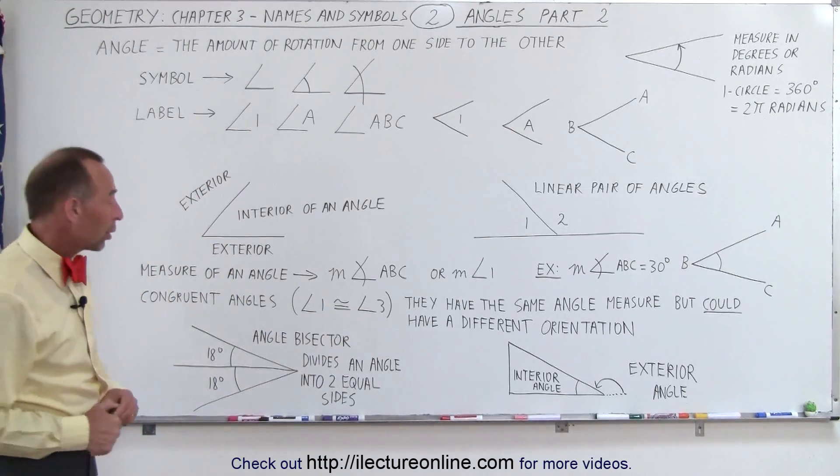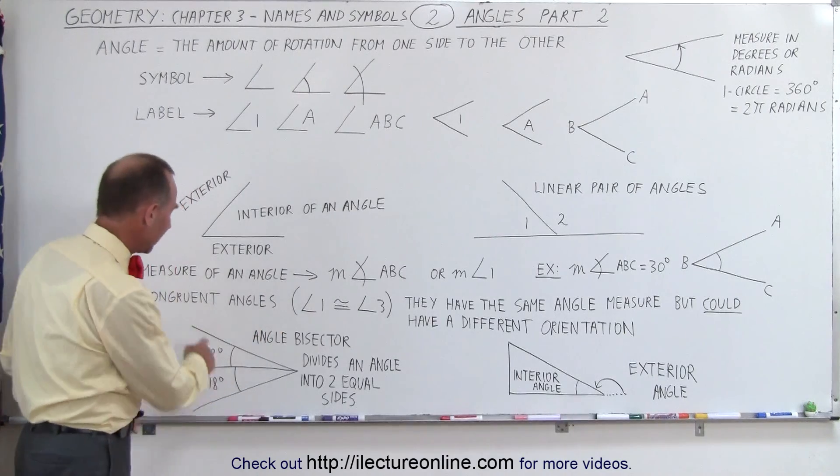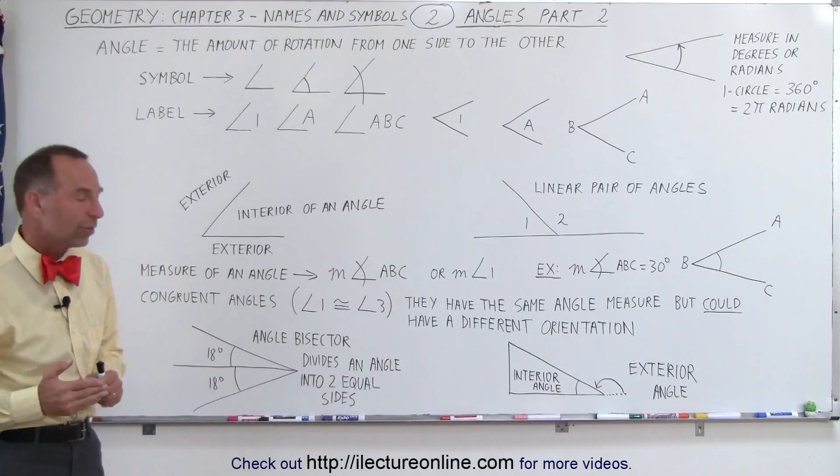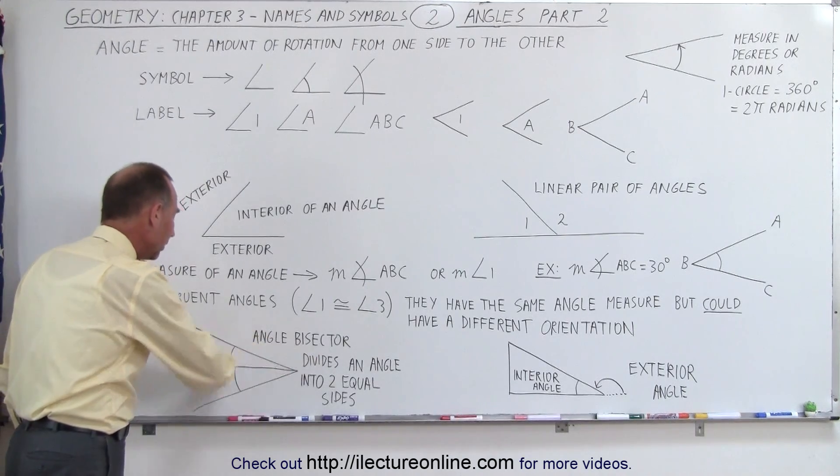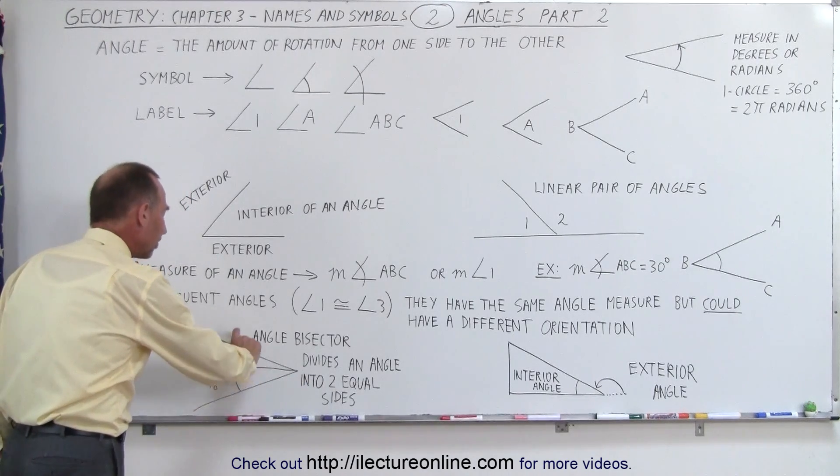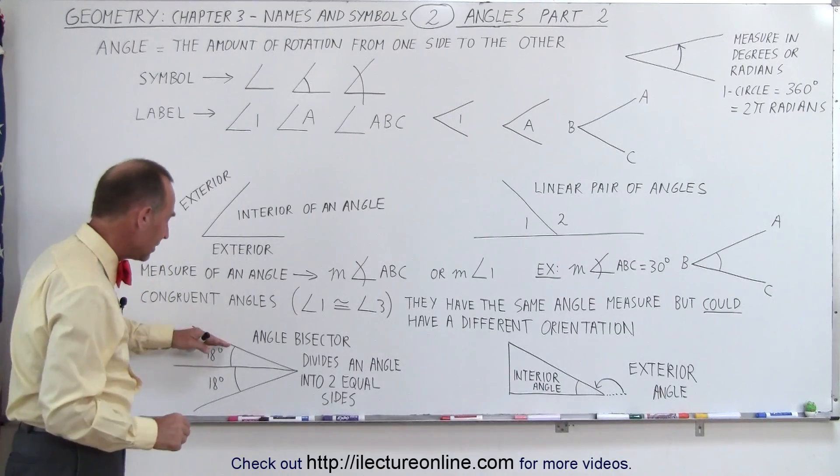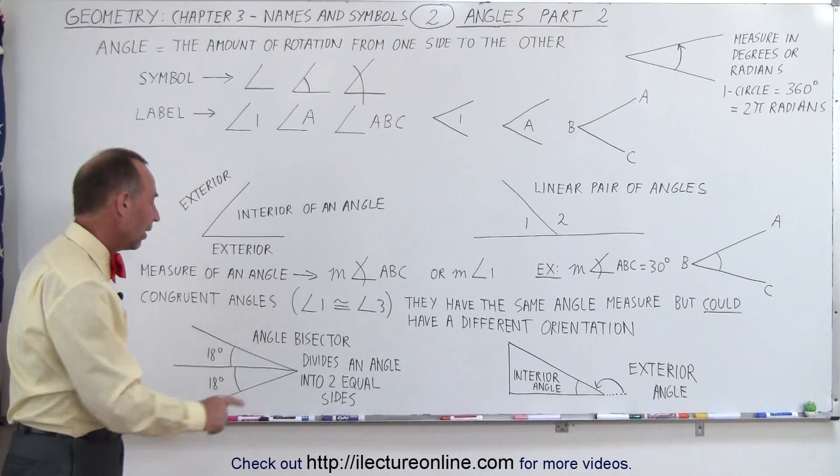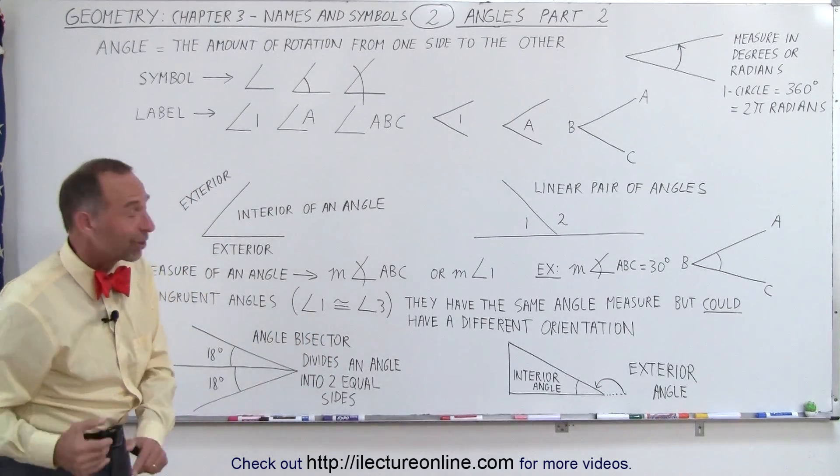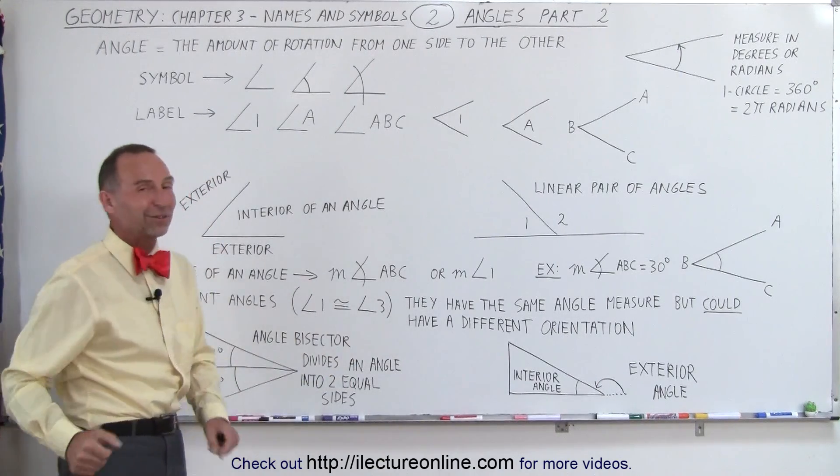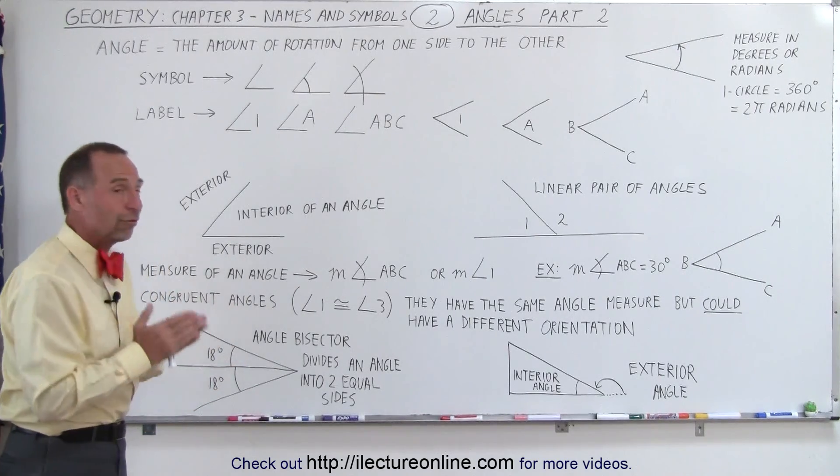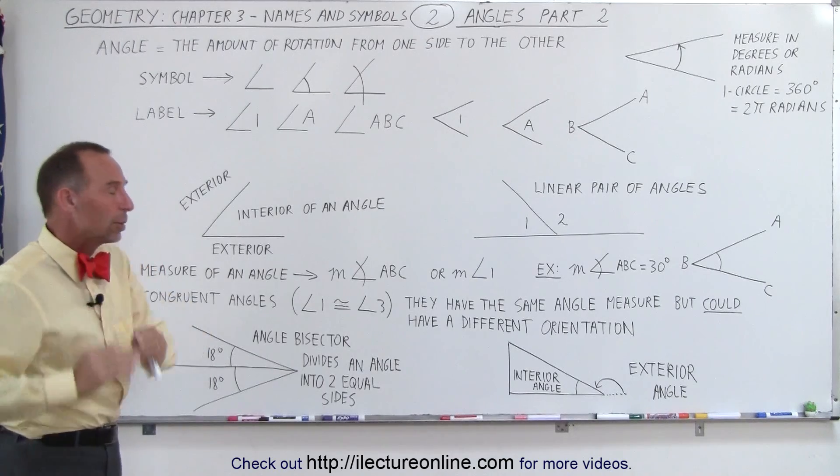Also, let's talk about what we call the angle bisector. Here we have an angle, and let's say that the angle has an angular measure of 36 degrees. Now we draw a line where it connects to the vertex of the angle, and the angular measure on either side of the line is exactly the same: 18 degrees and 18 degrees. An angle bisector divides an angle into exactly two equal sides. Of course, I don't have to say the word 'exactly,' but that's what it means.